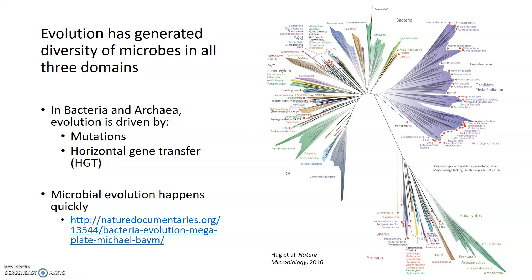The diversity we see in these phylogenetic trees and in microbes — and the fact that they exist in all three domains — has been driven specifically in bacteria and archaea by the same things that drive evolution in eukaryotes: the accumulation of mutations. Beneficial mutations can drive the generation of new species in the same way they do in eukaryotic organisms. But bacteria and archaea are special in that their evolution can also be driven by a process called horizontal gene transfer.